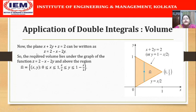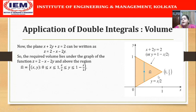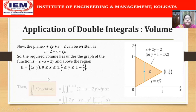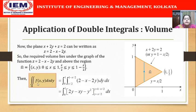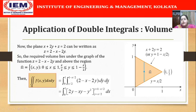Therefore, the required volume lies under the graph of z = 2 - x - 2y. The top surface is the plane x + 2y + z = 2, so z = 2 - x - 2y, and the base is the region omega where x varies from 0 to 1 and y varies from x/2 to 1 - x/2. The required volume is given by the double integral of (2 - x - 2y) dy dx, integrating first with respect to y from x/2 to 1 - x/2, and then with respect to x from 0 to 1.